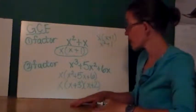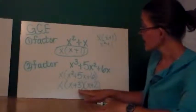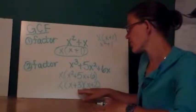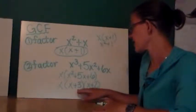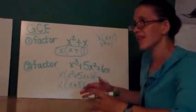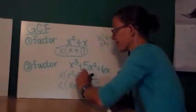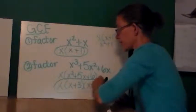I suggest, if you check using multiplication, that you first multiply these two expressions, x plus 3 and x plus 2 together, and then multiply the whole thing by x. I think it's just easier that way. But there's your factorization.